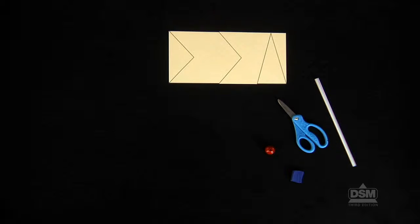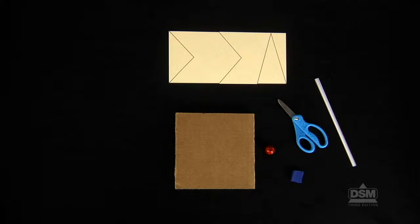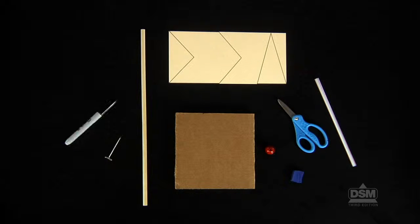Each team of two will need a lump of clay, a straw, a pair of scissors, a bead, a wind vane card, a piece of corrugated cardboard, a dowel, a T-pin, a felt-tip marker, and access to the tape.